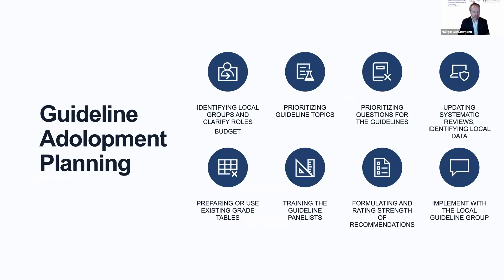Planning for adoptment includes identifying local groups such as professional societies, clarifying their roles, appropriate budgeting, prioritization of guideline topics and questions, updating or using existing systematic reviews, and identifying local data that might lead to changes in recommendations — for instance, around incidence, values, or cost. Preparing or using existing guidelines means that existing GRADE tables should be available.